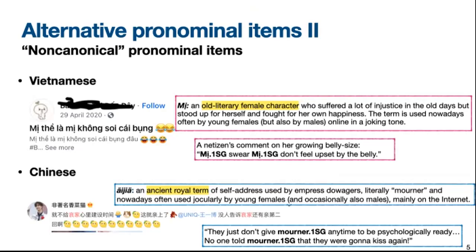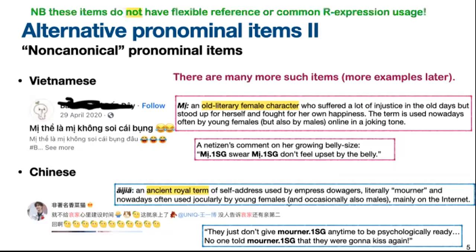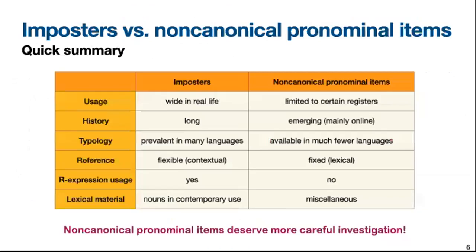At least in literary works, that is. Nowadays this term has also been revived on the internet. For example, this person says 'they just don't give mourner any time, and no one told mourner' — again, the use of mourner makes the sentence very funny. There are still many more such items in Vietnamese and Chinese, which we will show later. Unlike impostors, non-canonical pronominal items typically do not have flexible reference, nor do they have common R-expression usage. So both Vietnamese mị and Chinese āi jiā can only be used to refer to the speaker, but cannot be used to refer to the addressee or some third person.